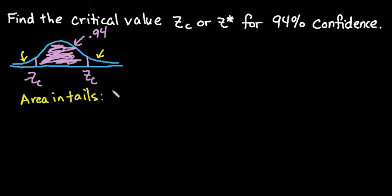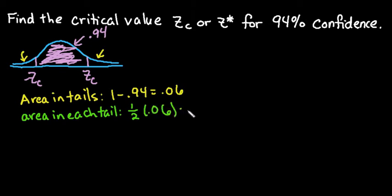So for this one, what we're going to do to find that area is we know that it's 1 minus 0.94, which equals 0.06. So that tells us that in both tails, collectively, we have 0.06. The area in each tail is half of that because of the symmetry. So that tells us that our area here is 0.03 and our area down here is 0.03.